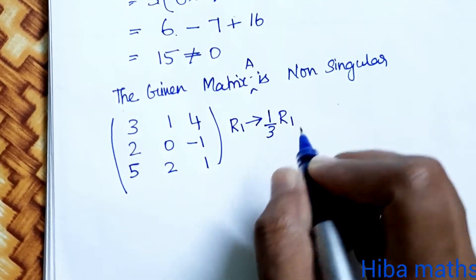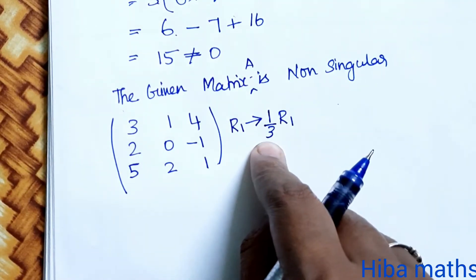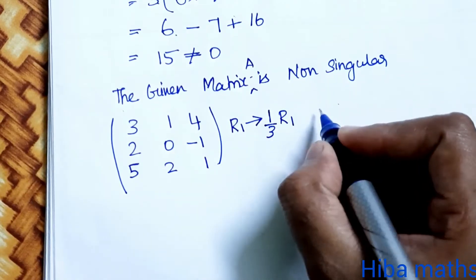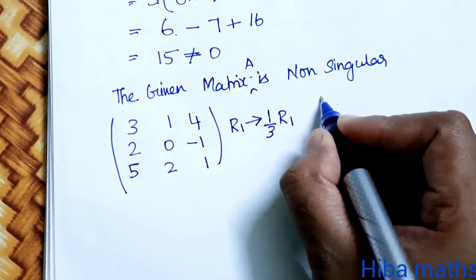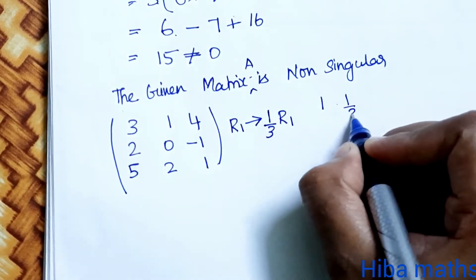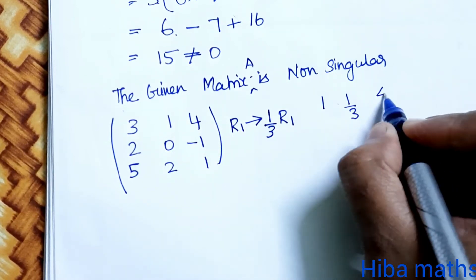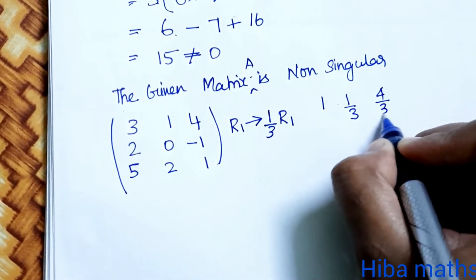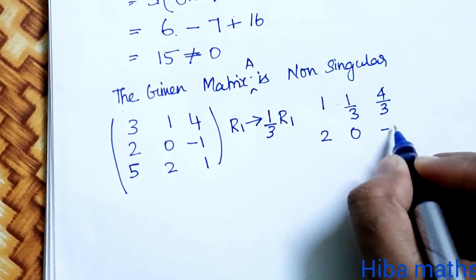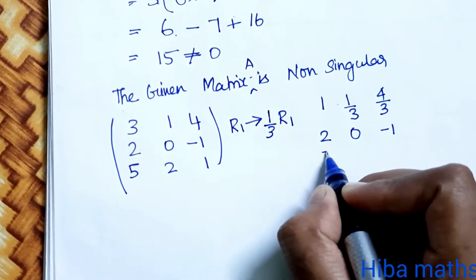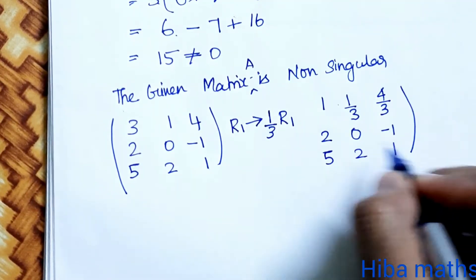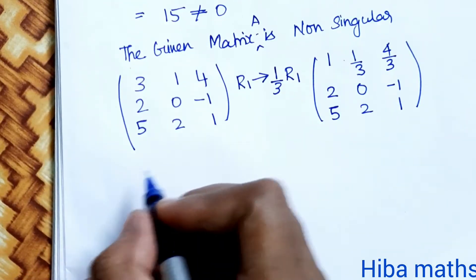Row 1 changes to (1/3) times row 1. So R1 becomes: 3 multiplied by 1/3 gives 1, 1 multiplied by 1/3 gives 1/3, 4 multiplied by 1/3 gives 4/3. The remaining rows stay as: [2 0 -1] and [5 2 1].